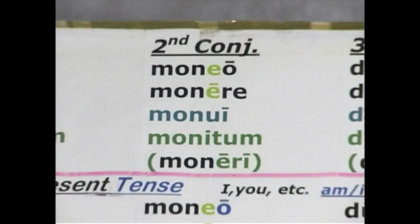For the second conjugation, our model verb is moneo, meaning 'I warn.' The four parts are moneo, monere, monui, monitum — to warn.